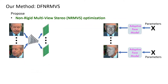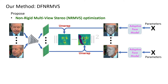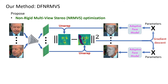To achieve this goal, we propose the non-rigid multi-view stereo optimization, which encodes the domain knowledge of multi-view geometry. We first compute the appearance consistency among views and minimize it to update the parametric facial geometry.